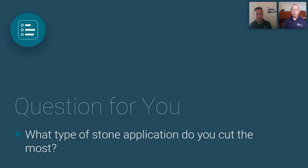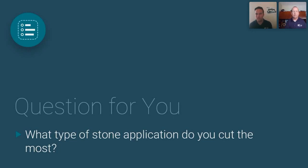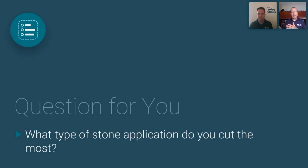Mario asked: with one machine that can cut stone and steel, what switch do I have to make? The only thing you have to do is change the material in the database provided on our machine — no change to the setup of the machine. Your water pressure and abrasive flow all stay the same. You simply go into the control, select a different material, and that changes the speed of the cut, either faster or slower depending on the material change you make.